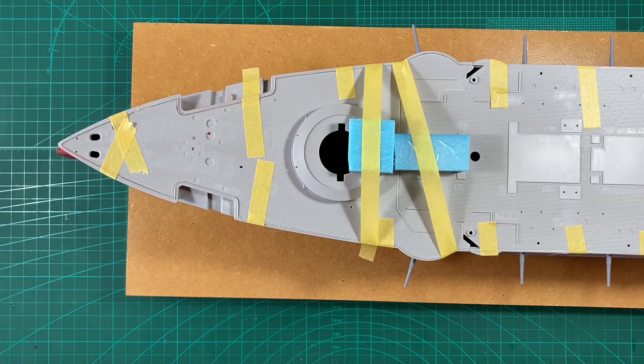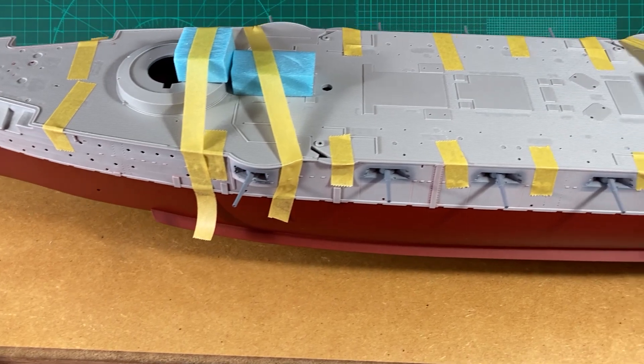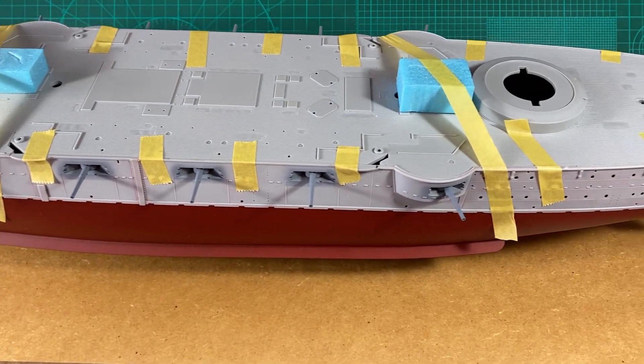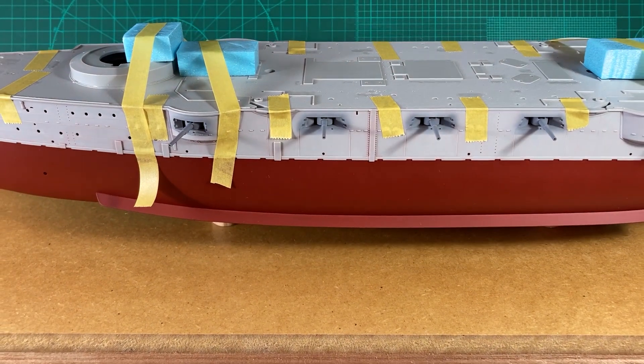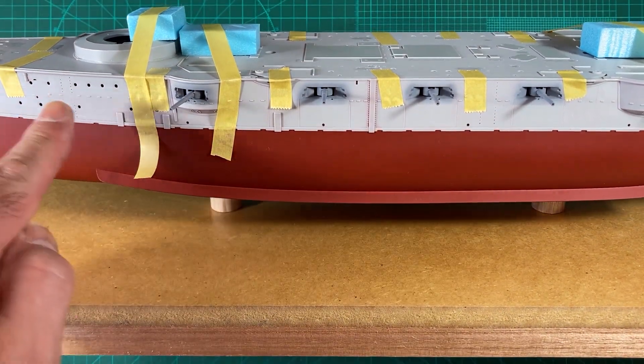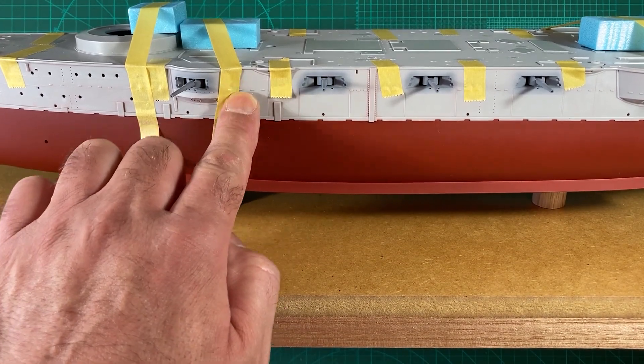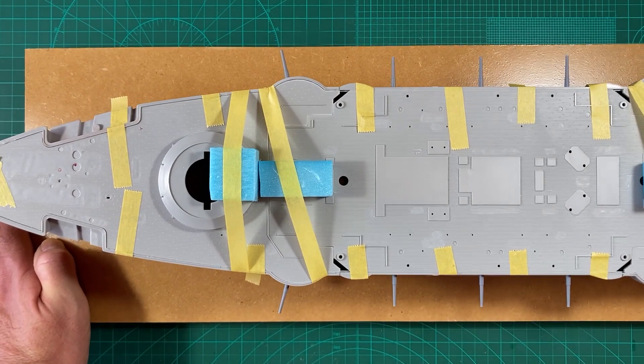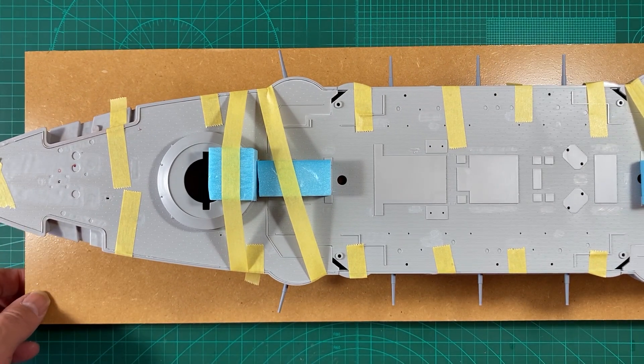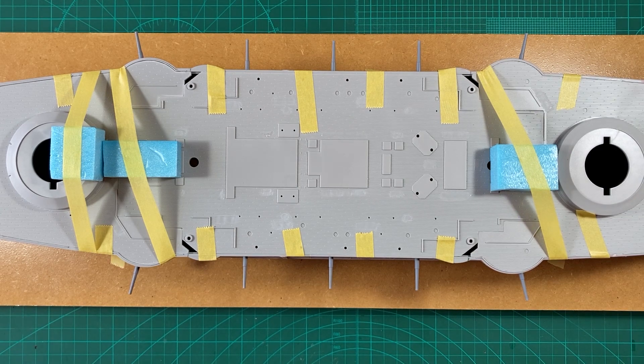Okay, so that's the deck. I'll now be able to start working on all the attachments and detail on the side, which will then allow me to prime and color coat and then get the wooden decks on. Then we'll move upwards. I'm going to call it there for this video. We'll get to some more exciting stuff next.